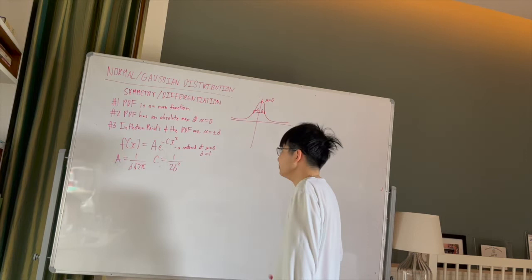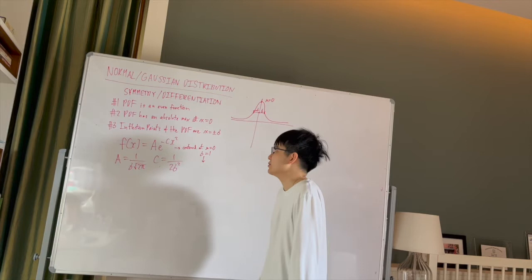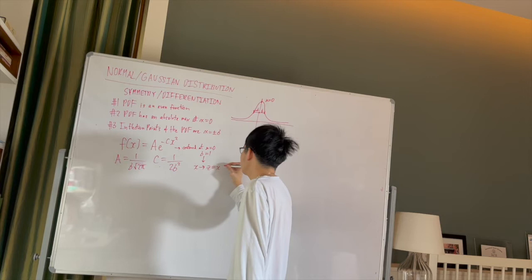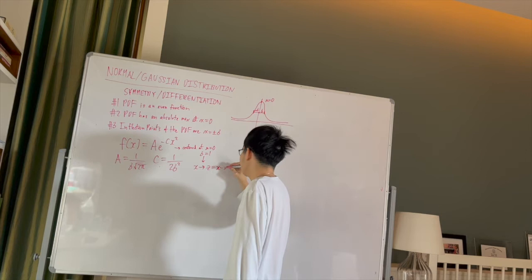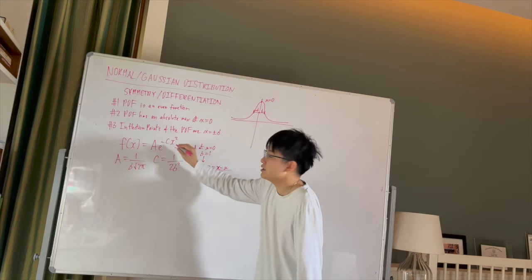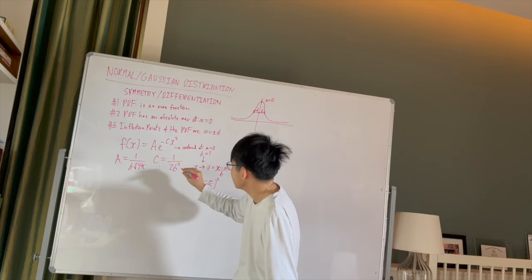And now, if we didn't want to restrict ourselves with this restriction, that mu has to be equal to zero, and sigma has to be equal to one, well, we could always transform x into the z-score. Which is basically, you take your arbitrary point on the distribution curve, and you translate it by some arbitrary mean, and divide it by the standard deviation. That's the definition of a z-score. So if that goes into here, we will get x minus mu over sigma squared. So that explains at least where the sigma squared in this comes from.